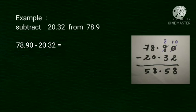Then, 8 minus 0, 8. 7 minus 2, 5. We get answer 58.58.